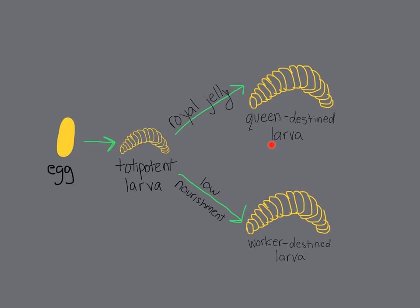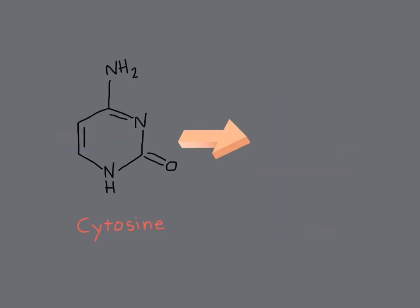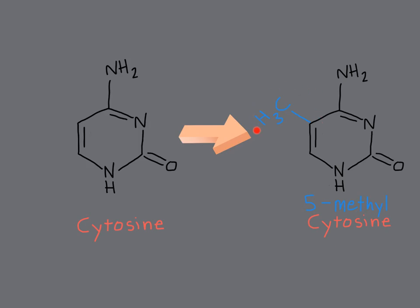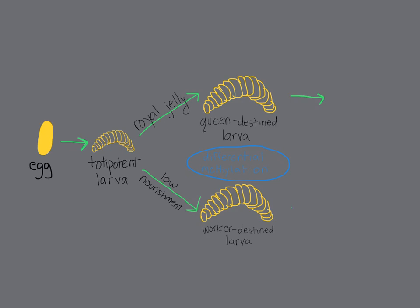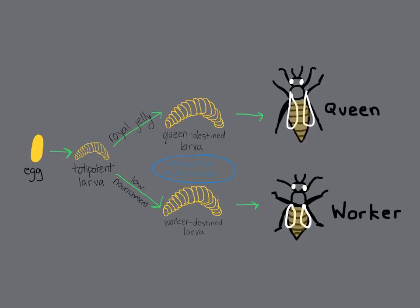So, what makes up the difference between the queen-destined larvae fed royal jelly and the worker-destined larvae fed a diet of lower nourishment? Researchers discovered that many genes are differentially methylated between the two. A group of enzymes called methyltransferases catalyze the transfer of a methyl group to CpG structures in DNA. Compounds present in the royal jelly lead to differential DNA methylation as well as potential histone modifications, which results in completely different phenotypes.